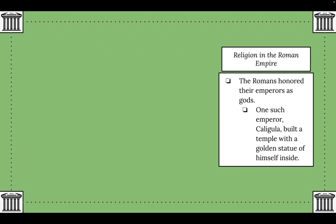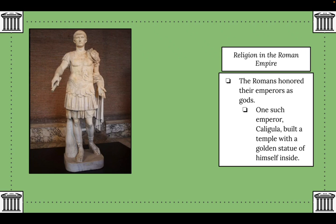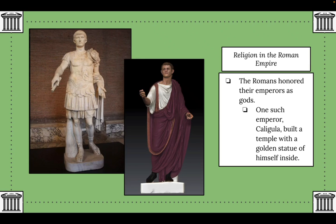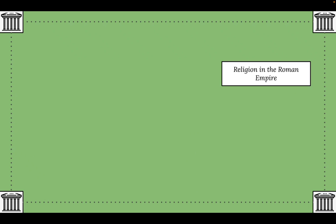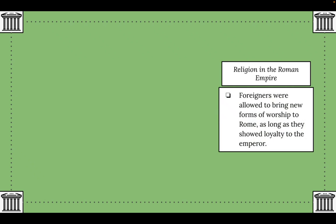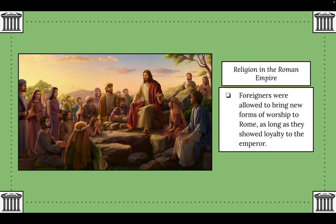The Romans honored their emperors as gods. One such emperor, Caligula, built a temple with a golden statue of himself and every single day dressed the statue in the exact clothes he was wearing. Foreigners were allowed to bring new forms of worship to Rome as long as they also showed loyalty to the emperor. One religion that caused problems was Christianity, because Christians did not want to worship the emperor as a god — they believed their own god was above all others.